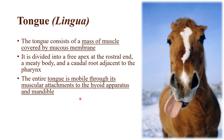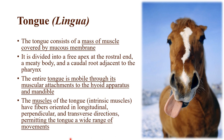The tongue has to be mobile to help shift food in the mouth and help when swallowing, and it needs to stay in place at the same time. That's why it is attached to the hyoid apparatus and to the bottom jaw. The mobility consists of different fibers of different muscles which create one big mass of muscle, and that's the main reason why the tongue is so mobile and able to contribute so many movements.